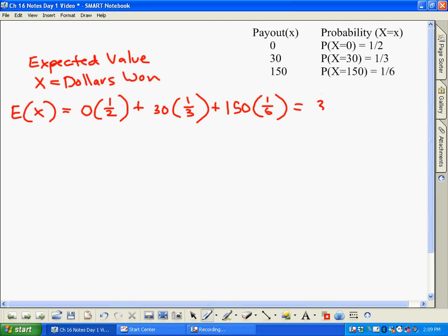You're going to wind up with $35, so that's what we would call how much you would expect to win on average. And notice, do you ever win $35 exactly? Well no, we win either zero, 30, or 150, but if you were playing this game hundreds and thousands of times, you would win on average $35.